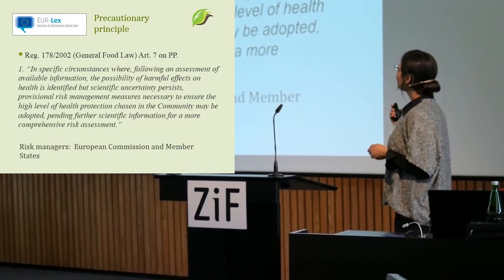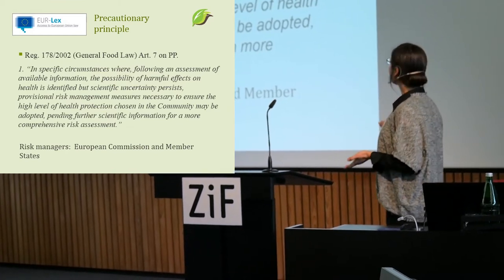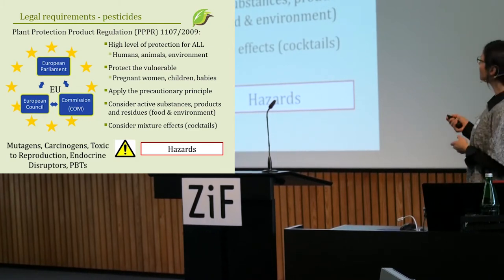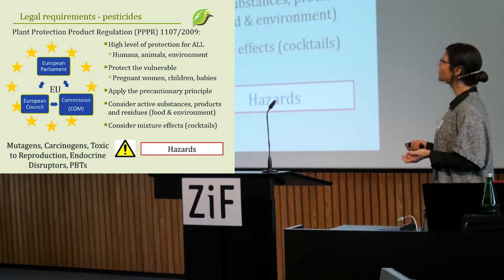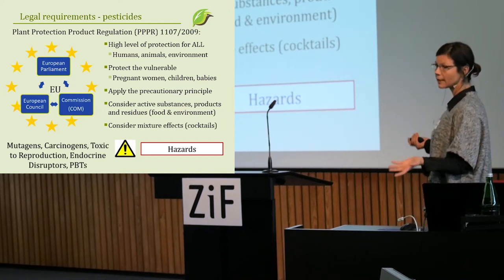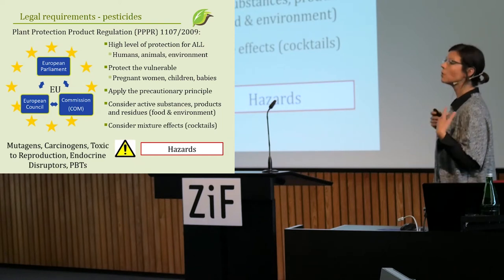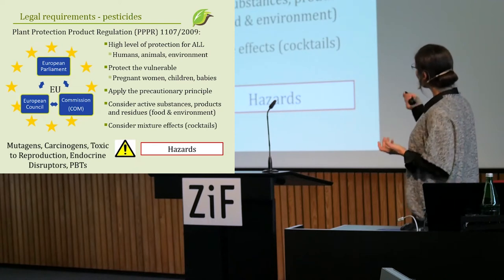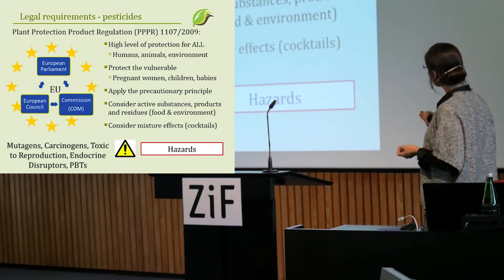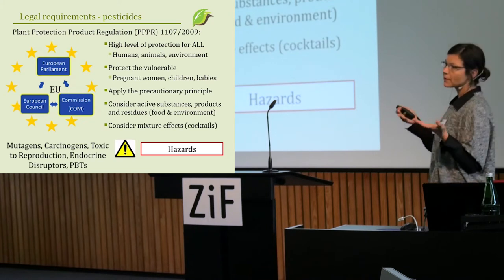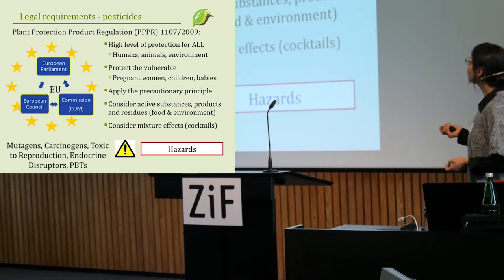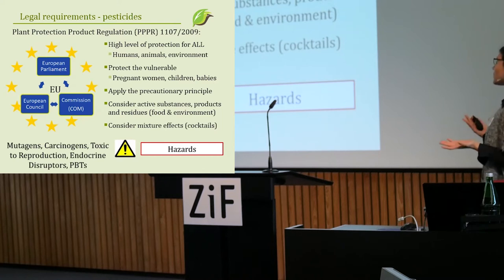The pesticide regulation is very clear on how to implement the precautionary principle. It is indeed a very good piece of legislation because it recognizes that pesticides have harmful effects. It wants to ensure a high level of protection for humans, animals, and the environment — including ecosystems, vulnerable populations, pregnant women, children, and babies — and to apply the precautionary principle and consider the harmful effects of active substances, whole products, and residues found in food and the environment, including mixture effects.